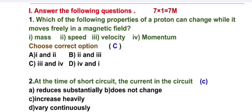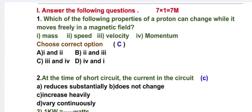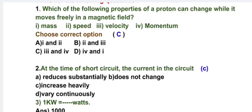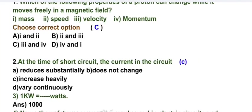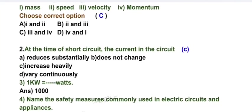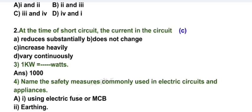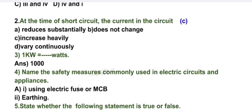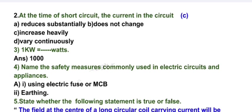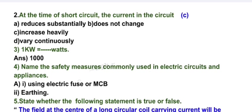At the time of short circuit, the current in the circuit increases heavily. One kilowatt is equal to dash watts: thousand watts. Whenever the word kilo appears, kilo means thousand.